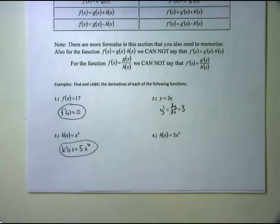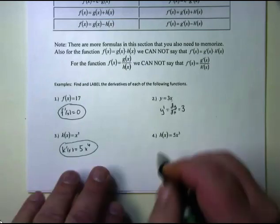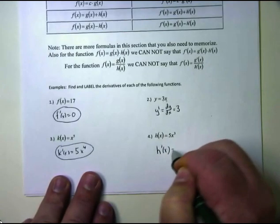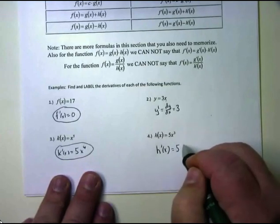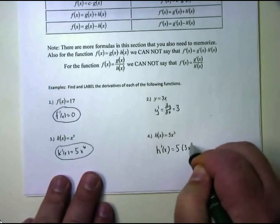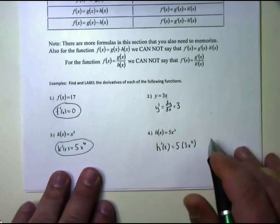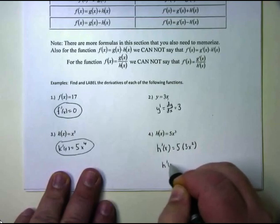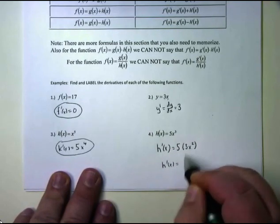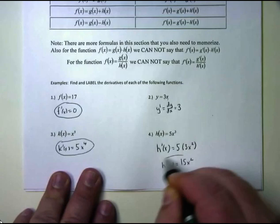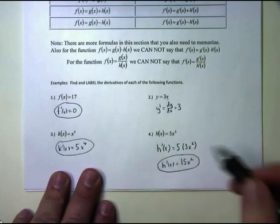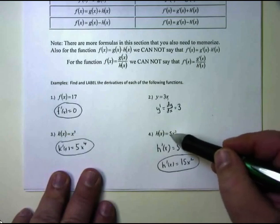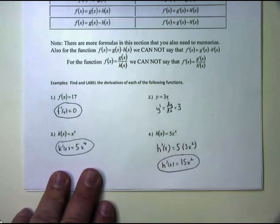Here's another one: h(x) equals 5x cubed. Then h′(x) would be — 5 is a constant, leave it alone. The derivative of x cubed is 3x squared: bring down the power, keep x, and subtract 1. Then clean it up: 5 times 3 is 15, so h′(x) equals 15x squared. Eventually we want you to just look at this and multiply 3 times 5 to get 15x squared directly.